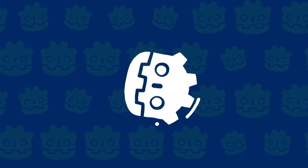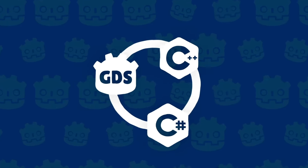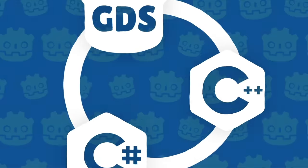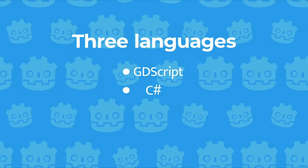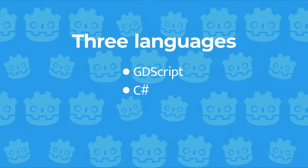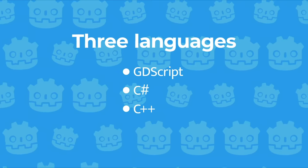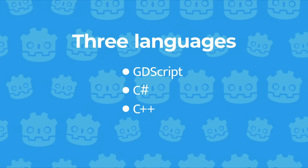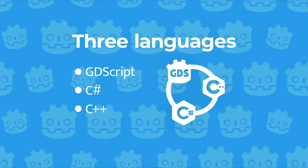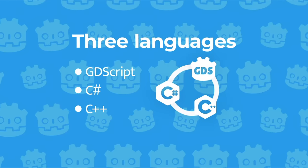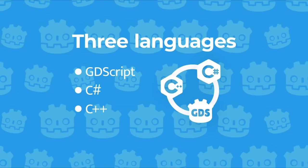You're wondering which language you should use in Godot, or why it has so many? By the end of the video, you'll have everything you need to decide. Godot offers three languages to code games: GDScript and C# for game scripting, and C/C++ for maximum flexibility and performance. All three are officially supported, and the beauty of it is that you can use multiple languages in the same project. You can pick the best language for each task or stick to the one you're most comfortable with. The choice is entirely yours.